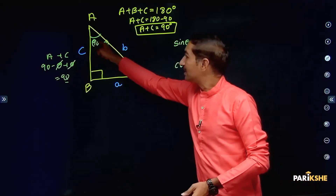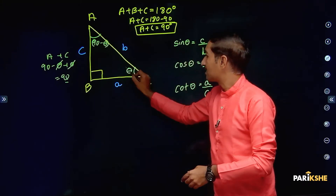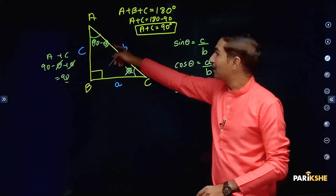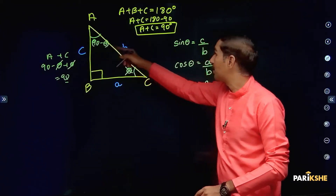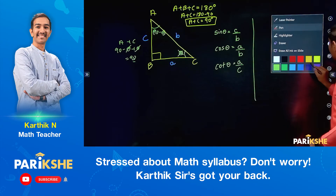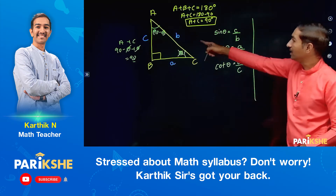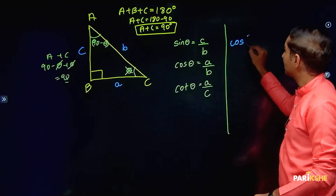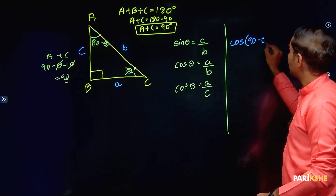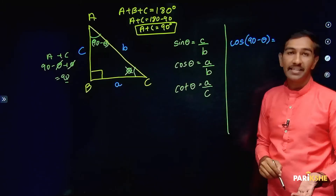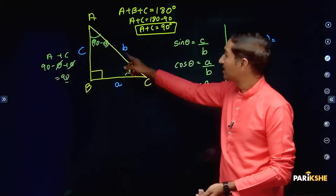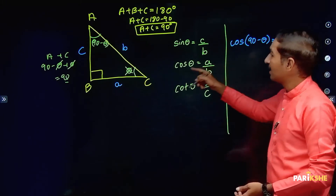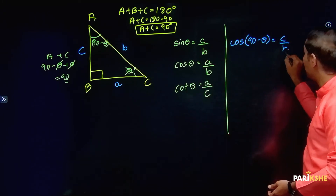Now, taking theta as angle C and 90 minus theta as angle A, let us find cos of 90 minus theta. Cos theta equals adjacent by hypotenuse. For angle A (= 90 minus theta), the adjacent side is C and the hypotenuse is B. So cos(90 minus theta) equals C by B.